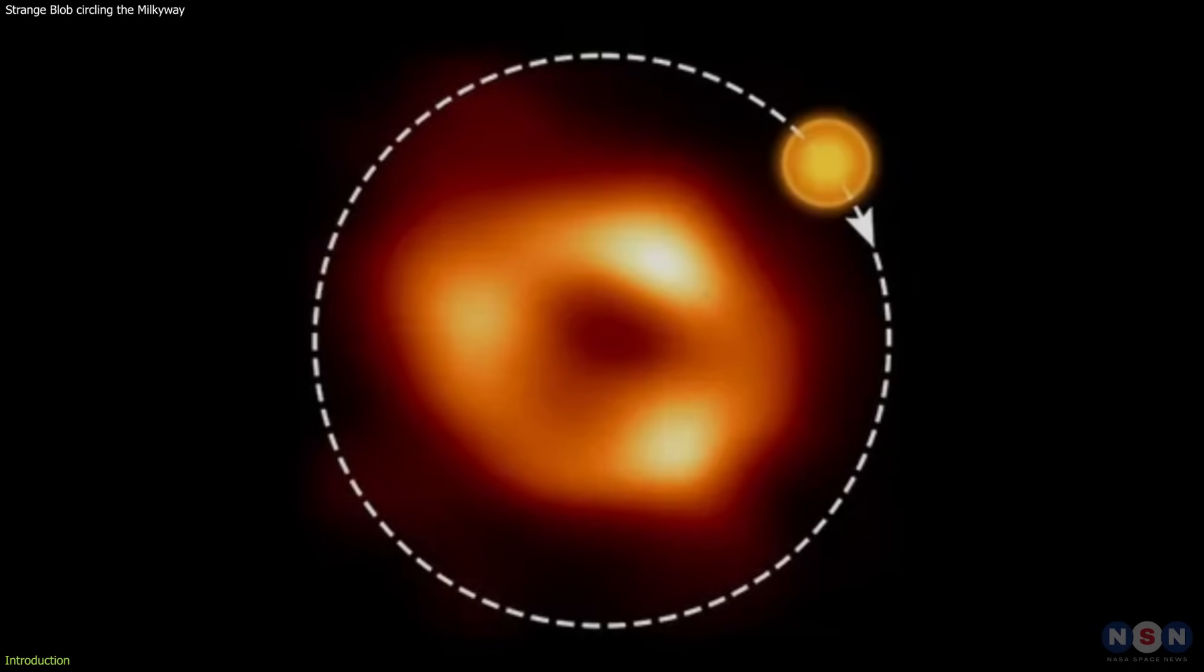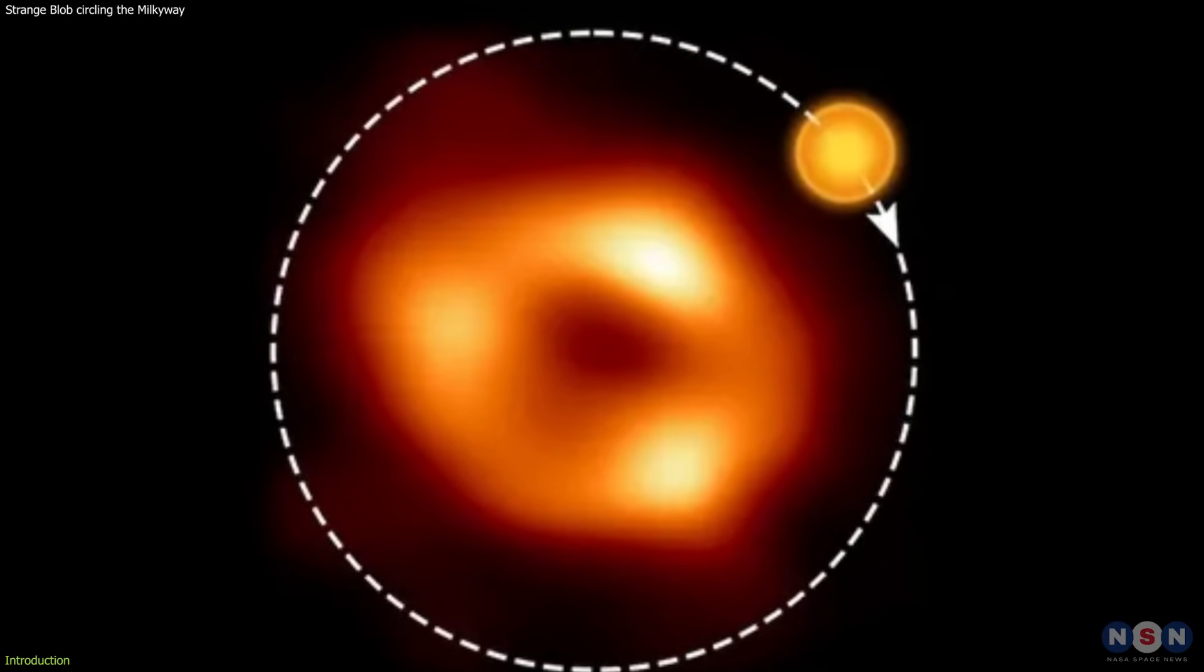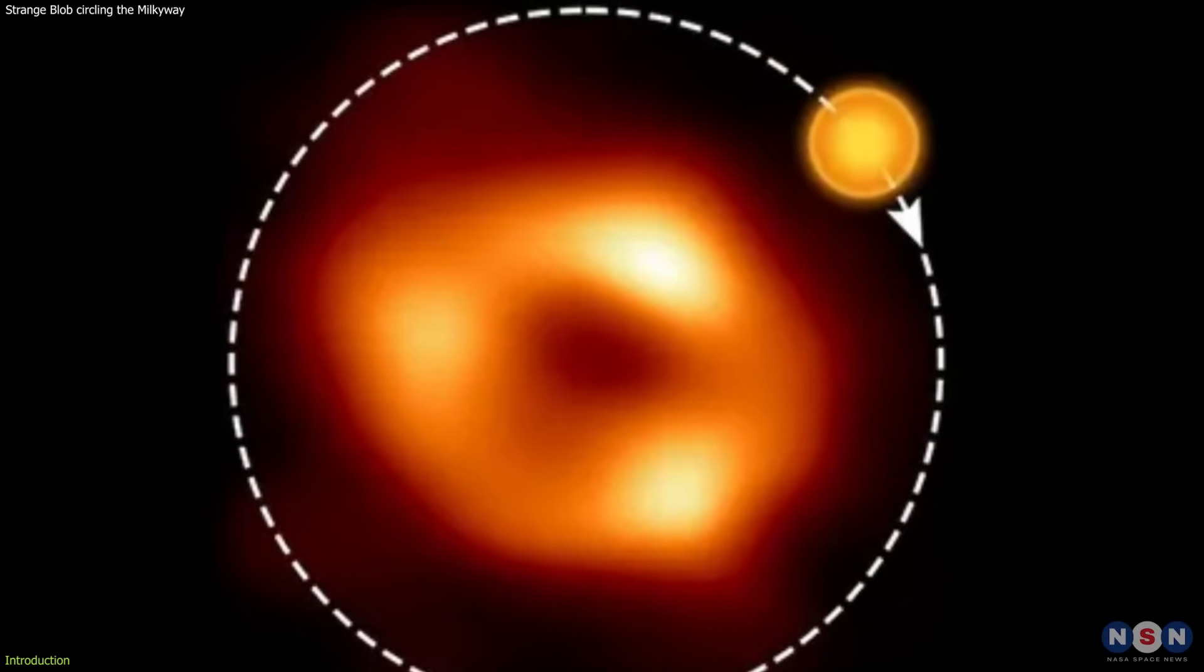Astronomers discovered a blob of gas that is hotter than the Sun, spinning around the supermassive black hole at the center of the Milky Way galaxy, and shooting powerful gamma ray radiation at Earth every 76 minutes.